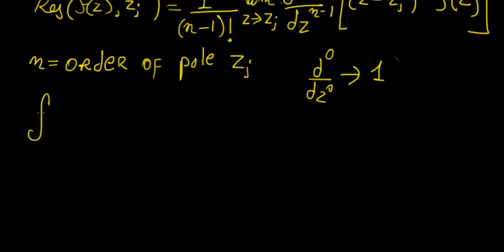Let's say we have the function, let's say we want to integrate (z + 3)/(z + 2) dz. Now immediately you can see that, let's say we have the curve C with |z| = 2.